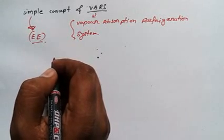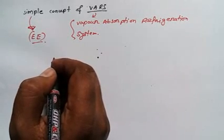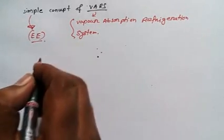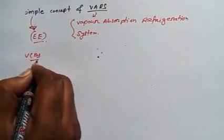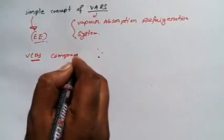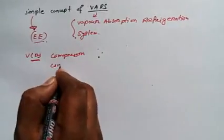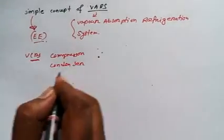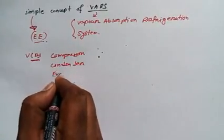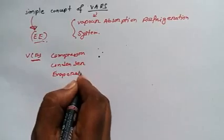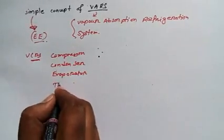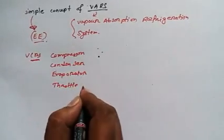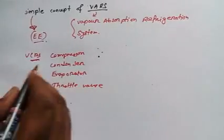In case of VCRS cycle, we used compressor, then condenser, evaporator, as well as throttle valve. But in this case, we are going to use all these components but we are not going to use the compressor.